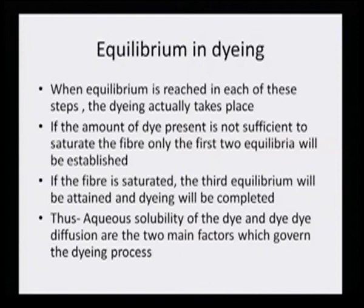Equilibrium in dyeing: when equilibrium is reached in each of these steps, the dyeing actually takes place. All these steps are not moving forward only — they are moving forward and backward, and as a result there is an equilibrium. There is a rate of the forward reaction and simultaneously some dissociations occurring, pushing it backwards. When the reaction moves both backward and forward, it attains equilibrium, and therefore only a part of the dye molecule will be adsorbed or dissolved, with each step having its own equilibrium.